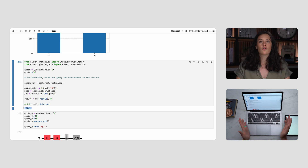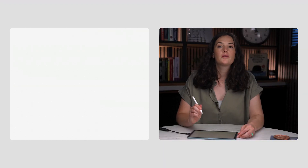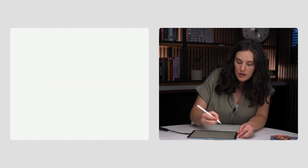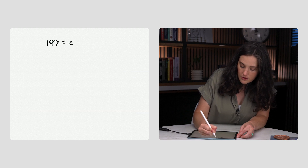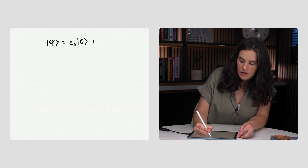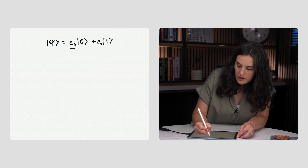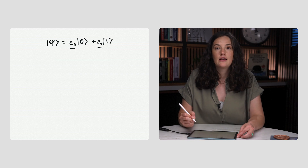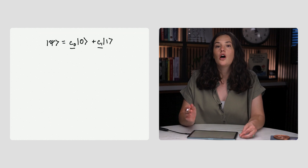That would be like flipping a coin, clap-catching it, and guaranteeing that the head would always be facing to the right — impossible classically. This is because a superposition is not just a probability distribution. Remember how we express a quantum state: Ψ = c₀|0⟩ + c₁|1⟩, where each of these coefficients are complex numbers, meaning they have both real and imaginary parts. So they tell us about the probabilities, but they also hide another quantity called the phase.